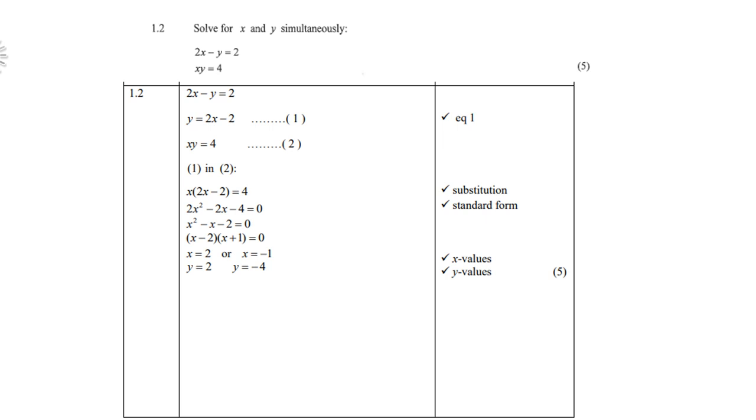Simultaneous equations: solve for x and y. So two equations are given: 2x - y = 2 is the linear equation and xy = 4 is the non-linear, of course it is our hyperbola. So you take your linear equation and you can either make x or y the subject, preferably y so that we can have no fractions.